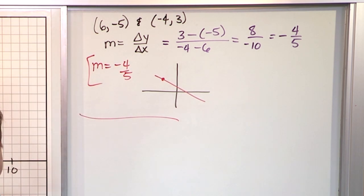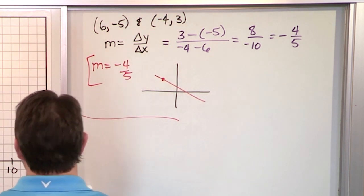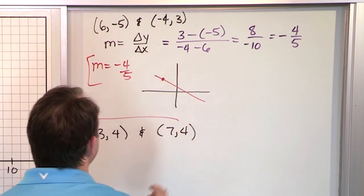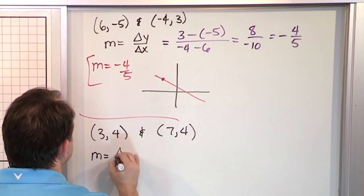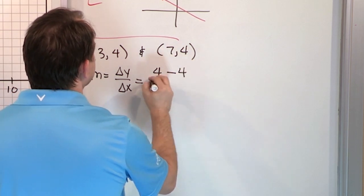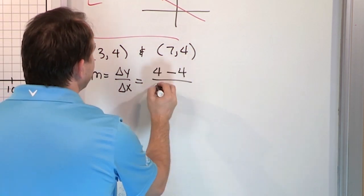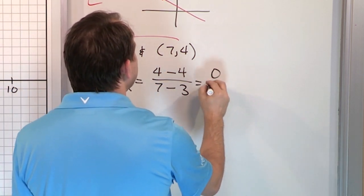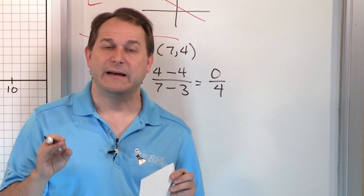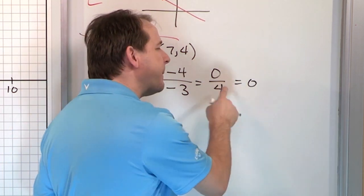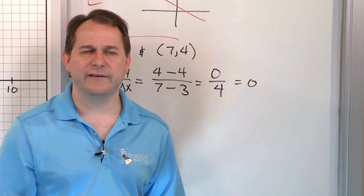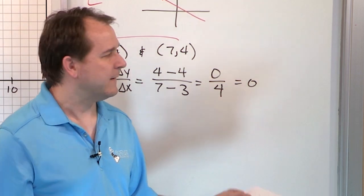We have two more examples, both very important. What if I have the points (3, 4) and (7, 4)? The slope is delta y over delta x: 4 minus 4 on top, 7 minus 3 on the bottom. That's 0 on top and 4 on the bottom. Zero divided by a number is not a problem — you get an answer of 0. It's only a real problem when zero is on the bottom.